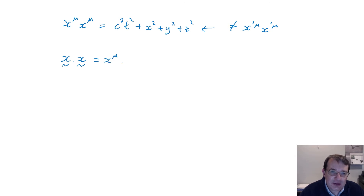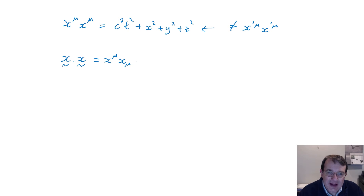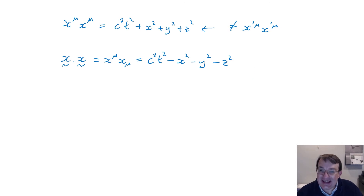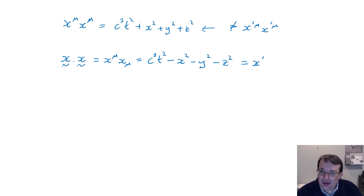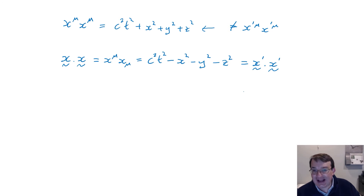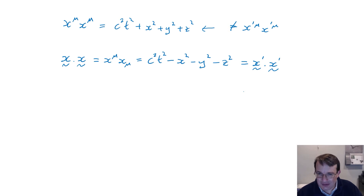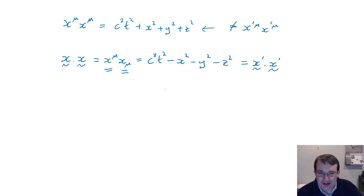It turns out that the dot product in relativity between two four-vectors is written as x^μ times x_μ — notice the index is now at the bottom — and this equals c²t² minus x² minus y² minus z². This is the same in all inertial frames. So if I did a Lorentz transform, this would equal x'^μ dotted with x'_μ. This is called a Lorentz invariant: it doesn't vary from one frame to the next.